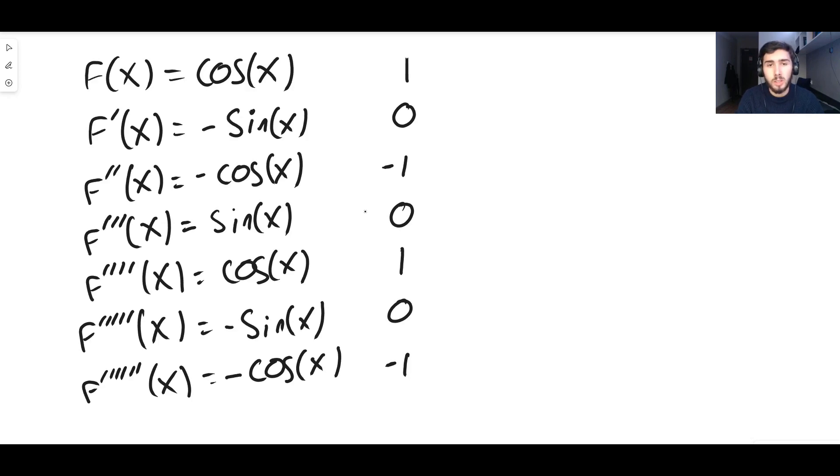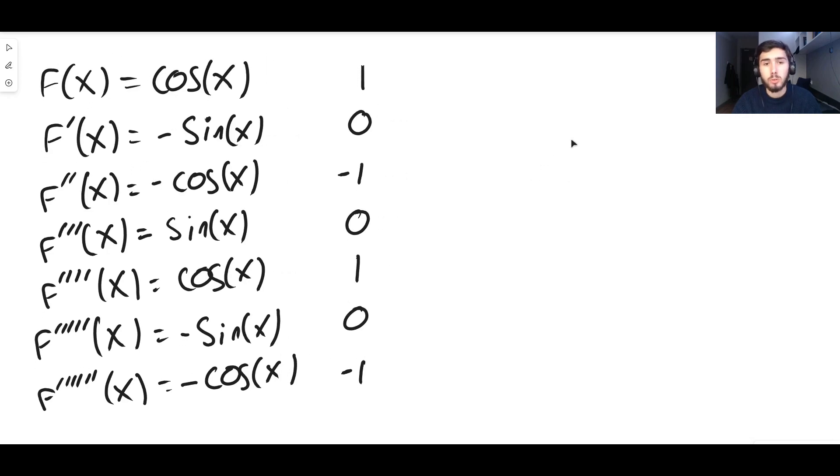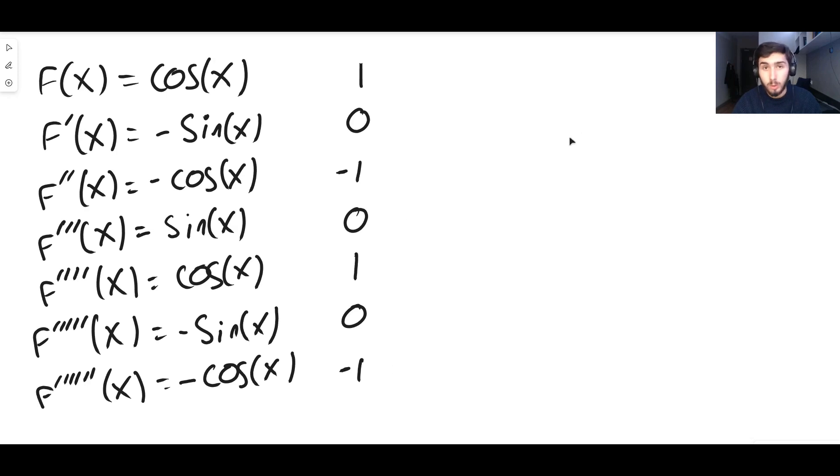You can see the pattern goes one, zero, minus one, zero, one, zero, minus one, and so on. So it alternates between ones and zeros. And those ones themselves alternate between being positive and negative. And that goes on forever. You could keep doing this, you could find 100 derivatives or 1000 derivatives, it would follow this pattern.